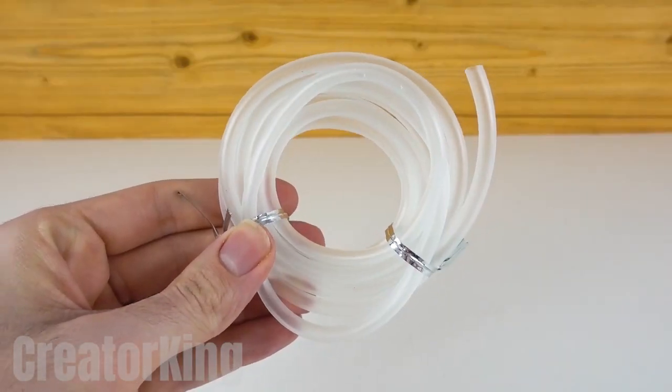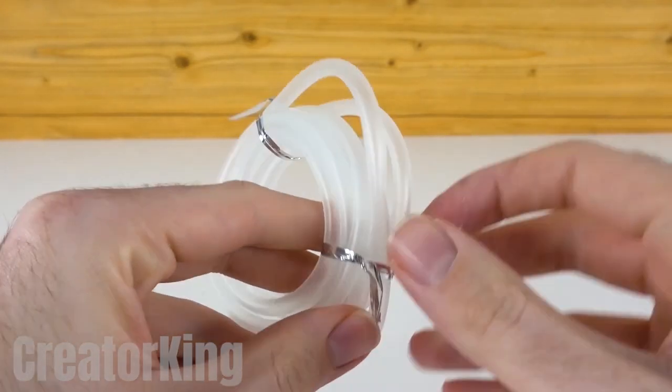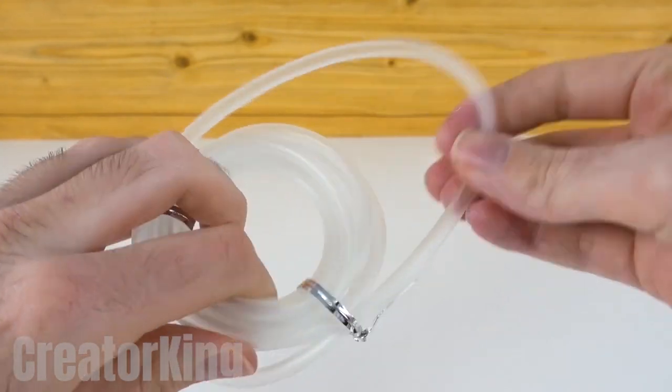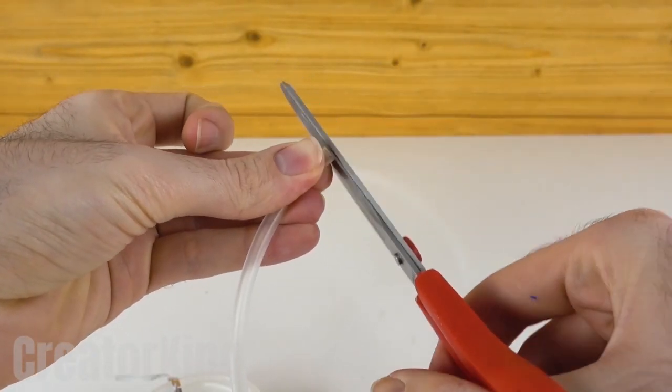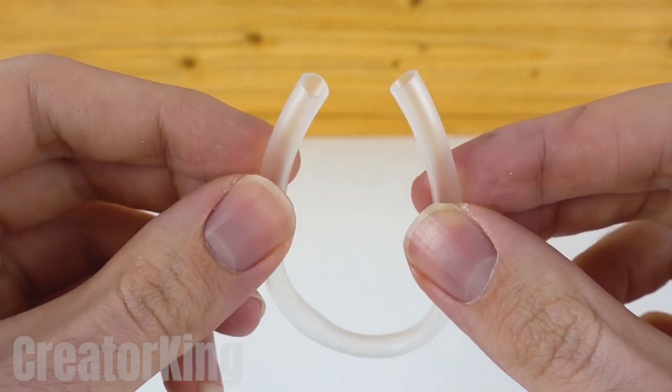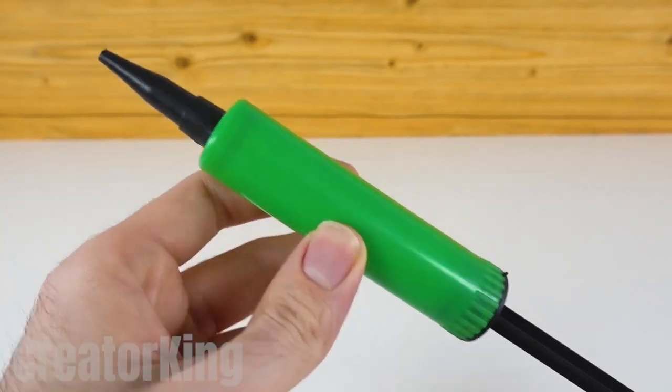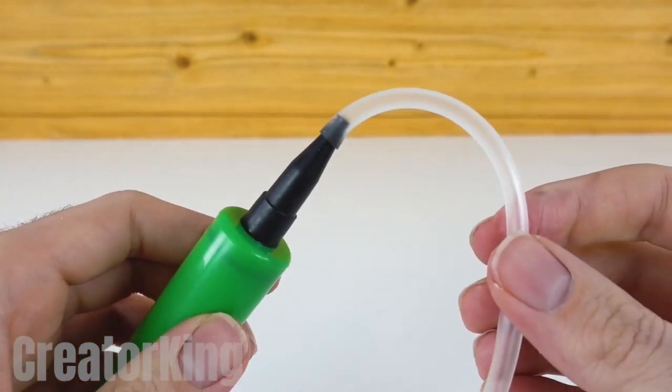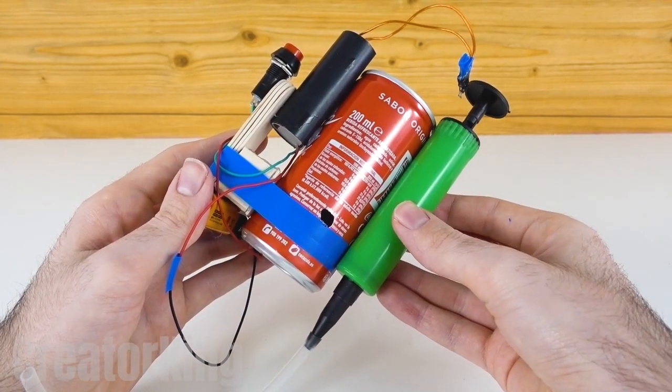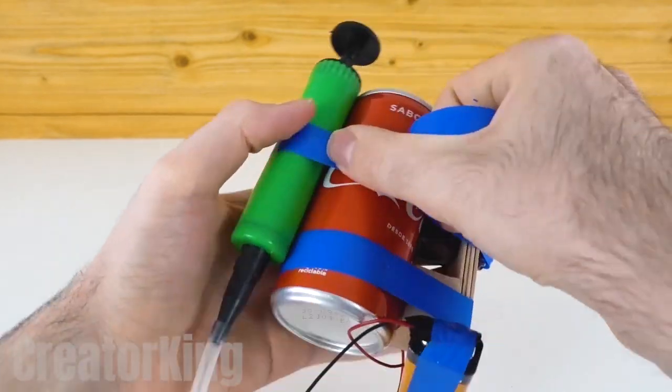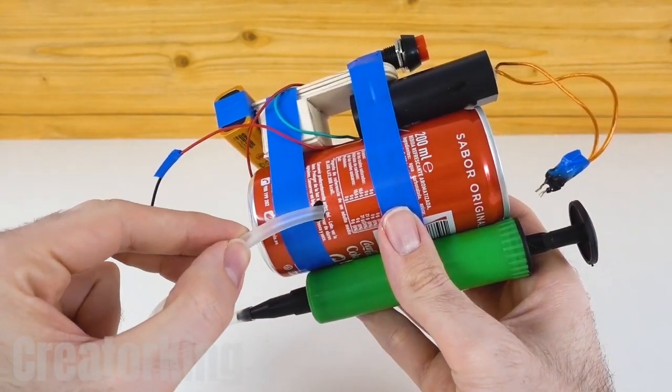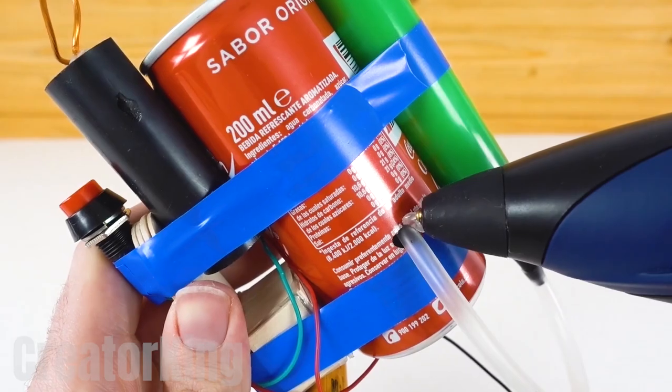Unroll a bit of transparent tube and cut a piece with some scissors. Once done, we'll need a balloon pump to connect it to. Put one end of the hose onto the air pump's outlet and attach it below everything with a couple rounds of adhesive tape.